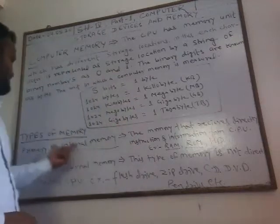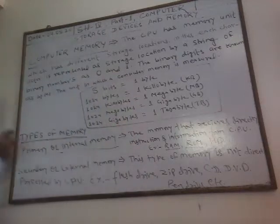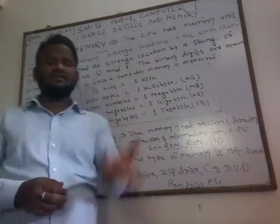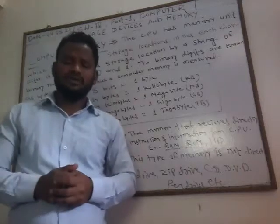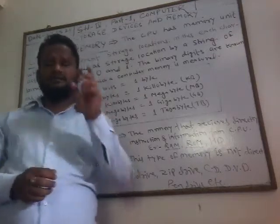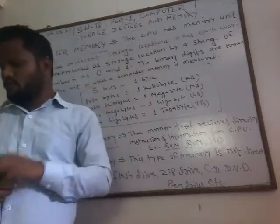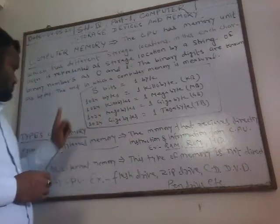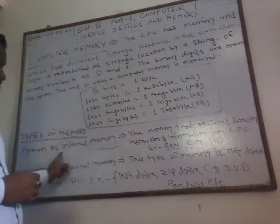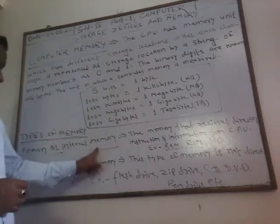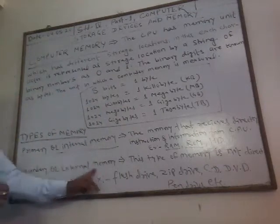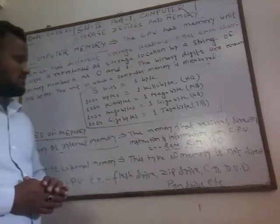Now, the types of memory. How many types of memory are there in the computer? Mainly, there are two types of memory: first, primary memory or internal memory; second, secondary memory or external memory.